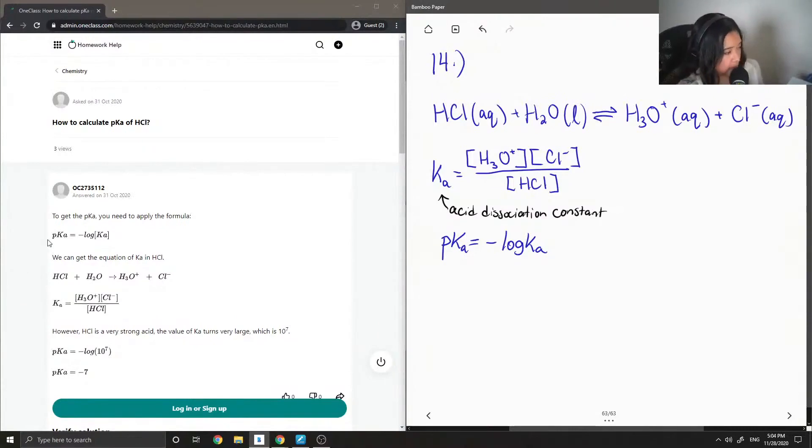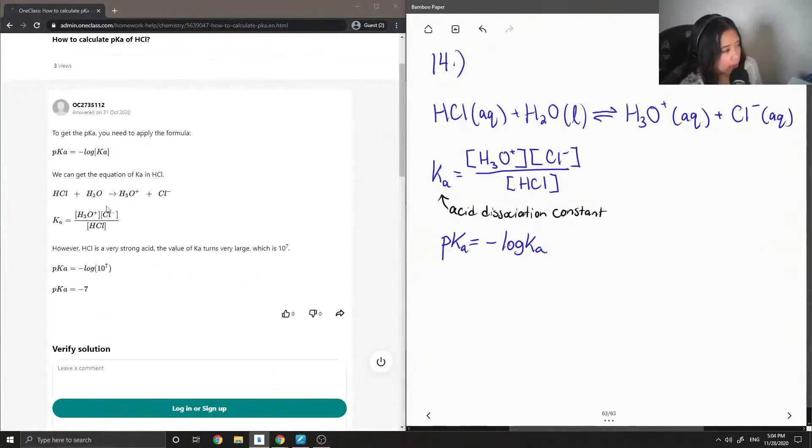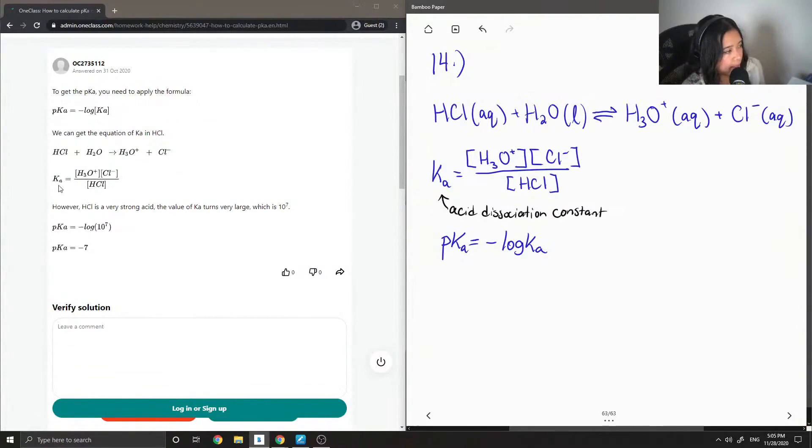Okay, so let's see what the junior tutor said. To get the pKa, you need to apply the formula pKa equals negative log of Ka. Get the equation of Ka: HCl plus H2O makes H3O plus plus Cl minus. Ka equals the concentration of H3O plus times the concentration of Cl minus divided by HCl.